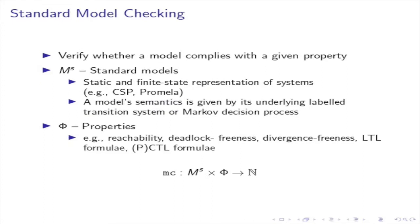Standard model checking is the problem of verifying whether a model complies with a given property. Model checking does that by exhaustively exploring the state space of a given system. In the context of standard model checking, the models are usually static and finite state representations of the system under verification. A model's semantics is given by its labeled transition system or Markov decision process in the case of probabilistic systems. Properties to be verified include reachability, LTL properties, computational tree logic for probabilistic systems, and so on. The total model checking problem can be seen as a function which, given a model and a property, gives a number encoding the result of the verification — say 0 for invalid and 1 for valid.